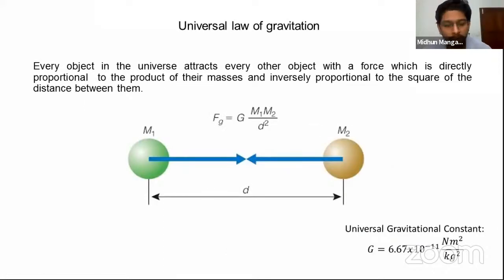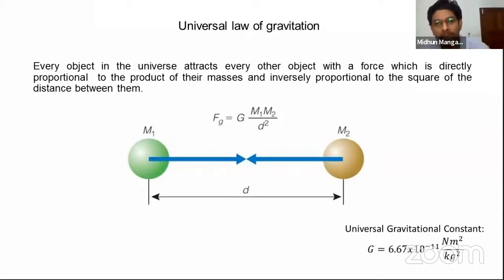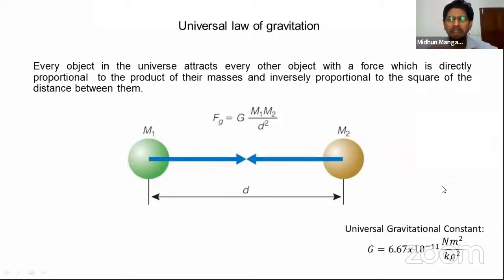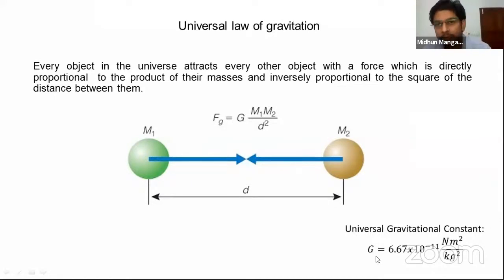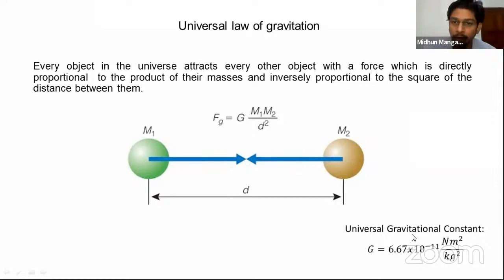The fundamental law underlying all spacecraft missions is Newton's Universal Law of Gravitation: every object in the universe attracts every other object with a force directly proportional to the product of their masses and inversely proportional to the square of the distance between them. The equation is F = G·M₁·M₂/r². The universal gravitational constant G = 6.67 × 10⁻¹¹ N·m²/kg² — an important value to remember for calculations.